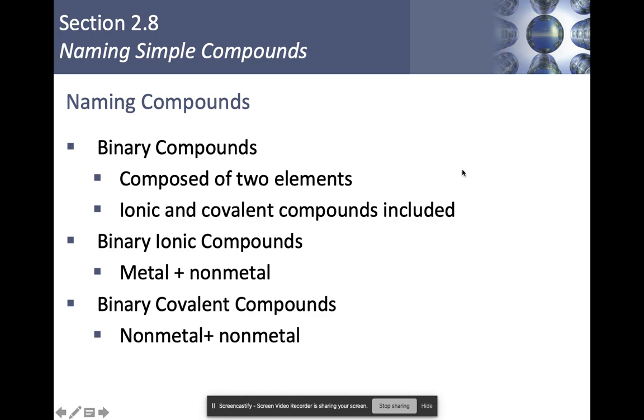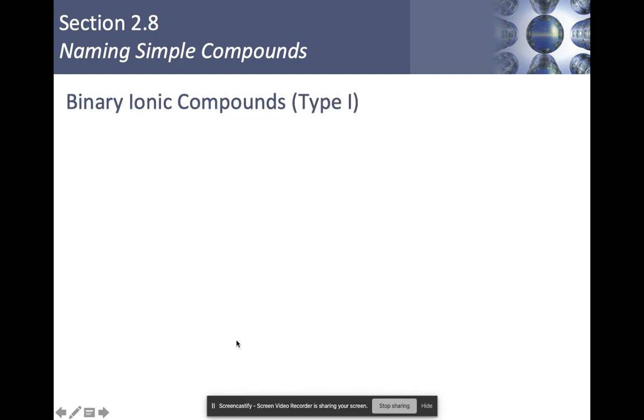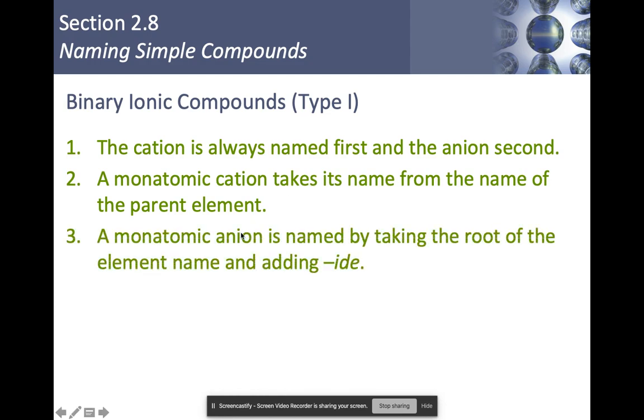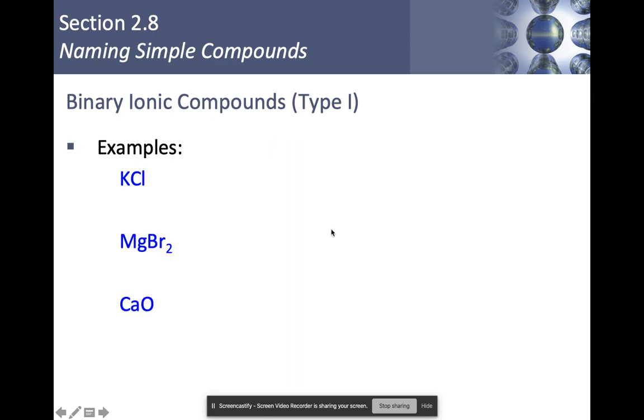Let's talk about type 1. In type 1, the cation is always named first, and the anion is always named second. Monatomic cations take the name from the element, whereas our anions, we have to change the ending to '-ide'. I have KCl, so K is potassium, Cl is chlorine, and I change that to chloride, so that's potassium chloride. MgBr2, Mg is magnesium, Br is bromine, but I change the ending to bromide, so it's magnesium bromide. CaO, Ca is calcium, O is oxygen. I change my ending for oxygen to '-ide', so it becomes calcium oxide. Notice I didn't care about these subscripts.